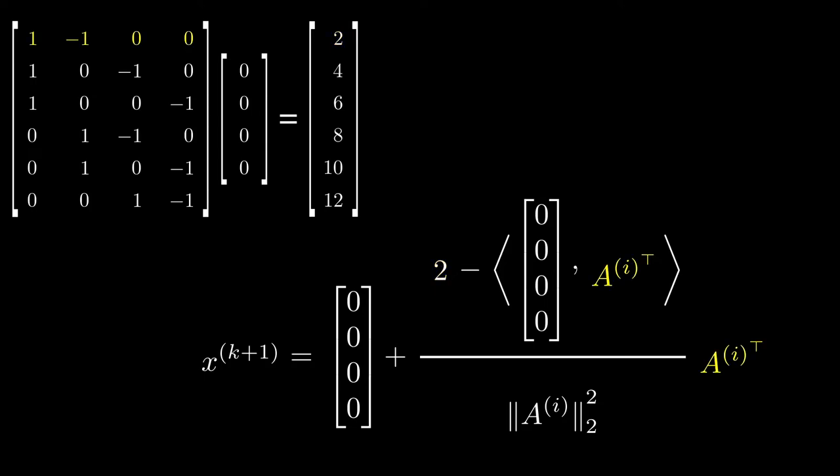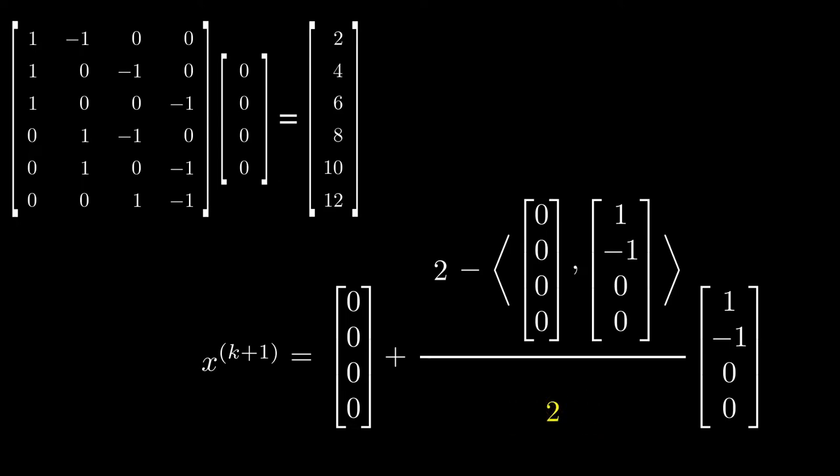ai transpose is the current row from our A matrix, and we transpose it to give us a column vector. In the denominator, we have the 2 norm of ai squared. This gives us the number of teams involved in the game, so here it's 2.